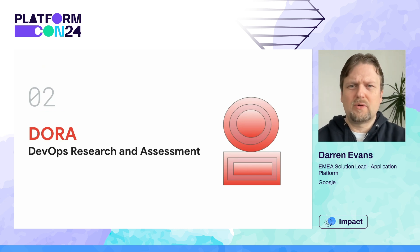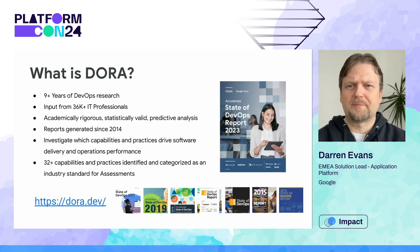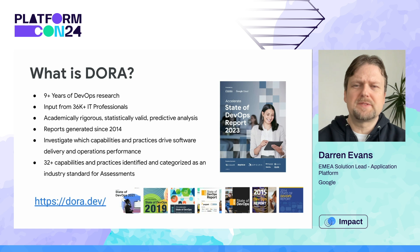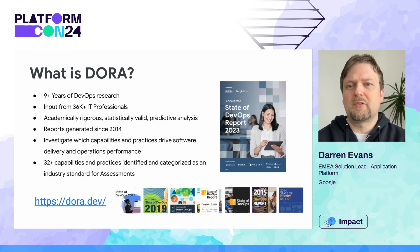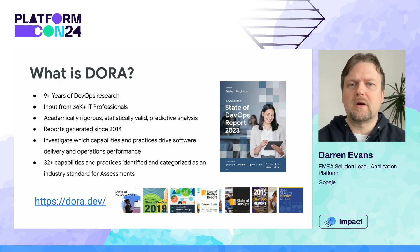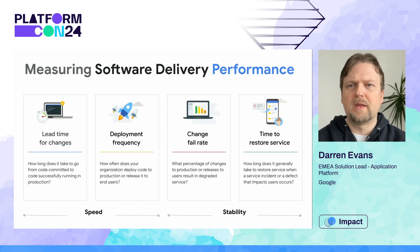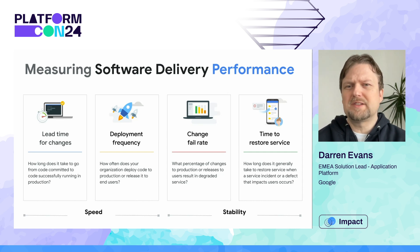Let's talk about DORA, or DevOps Research and Assessment. DORA is a program led by Google that aims to understand the capabilities that drive software delivery and operations in organizations. For the last nine years, we've produced the State of DevOps report, hearing from over 36,000 professionals worldwide. You can go to dora.dev to read any of the reports — they are all available online for free. DORA's four key metrics measure the performance of software development teams' DevOps practices and fit into two buckets: speed and stability.